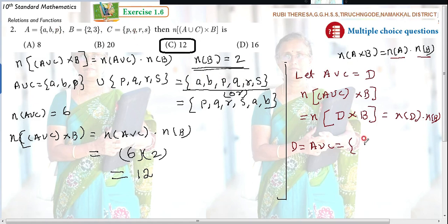What is A union C? A, B, P, Q, R, S. That is D. So instead of N of A union C, you can write N of D equal to 6. N of B equal to what? 2. Therefore,